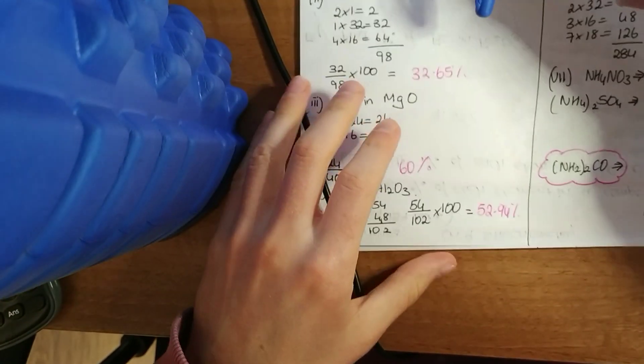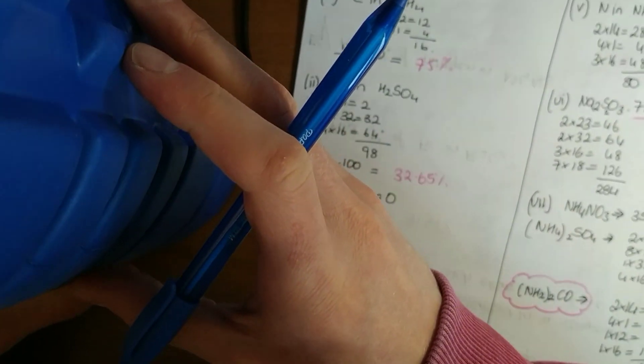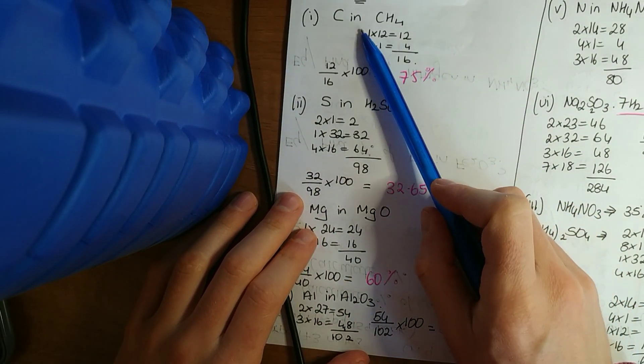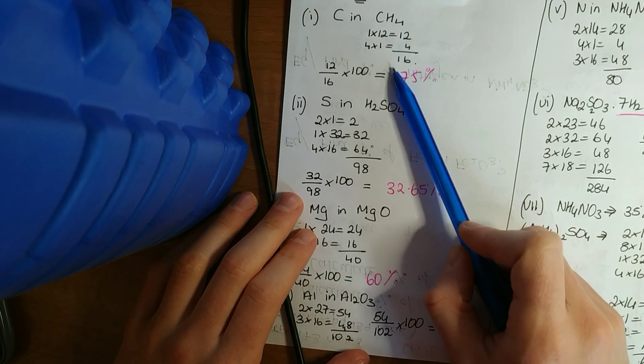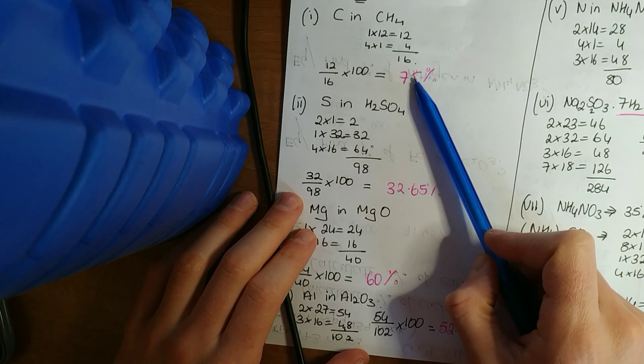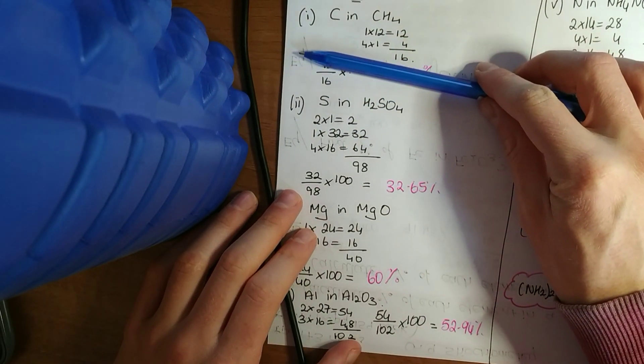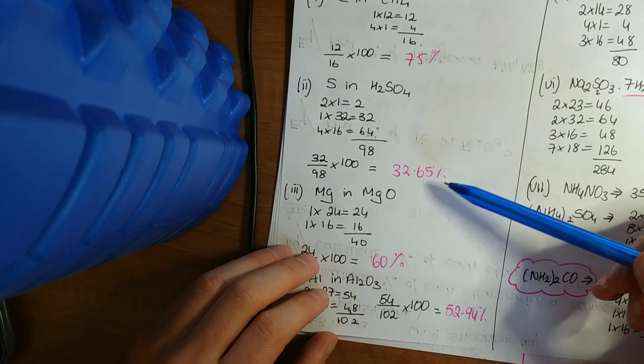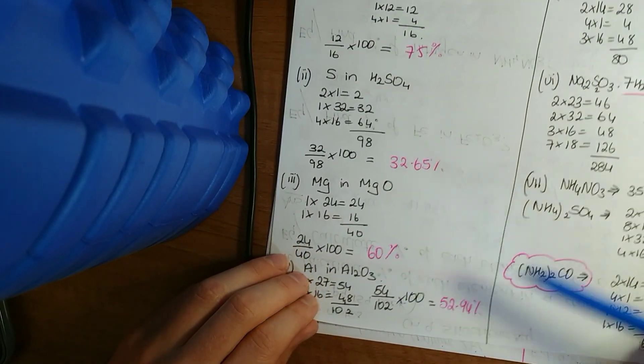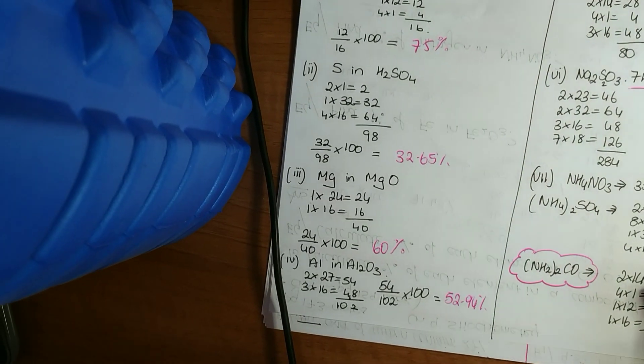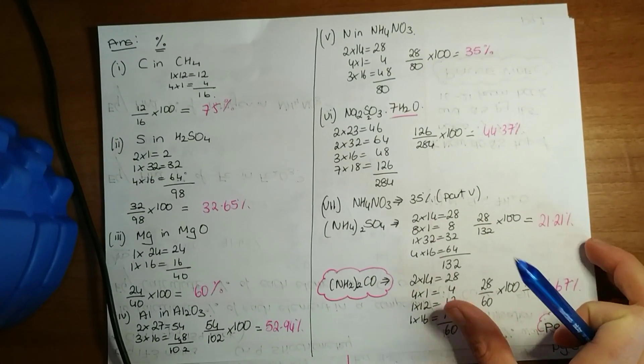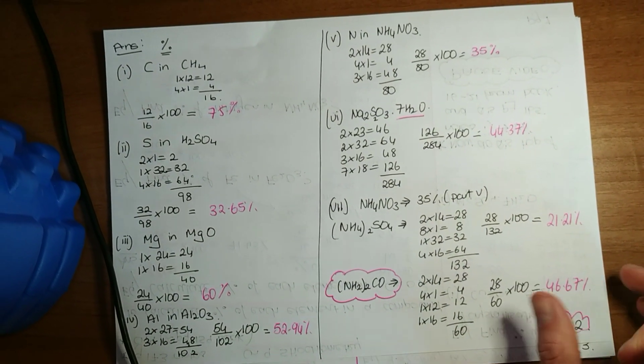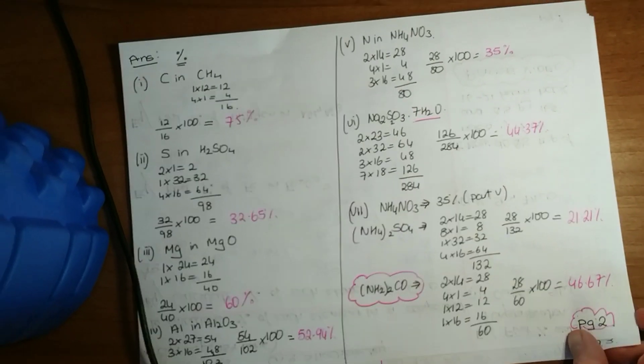Now just the answers of those. And again, if you didn't have access to the book or the notes, there's the questions. Carbon in CH₄, answer's 75% so you can just cover up the answers or ignore it and just work through the questions. And then I got 32.65.